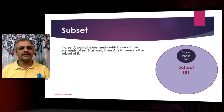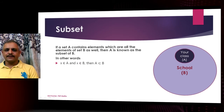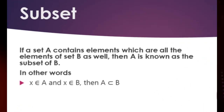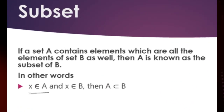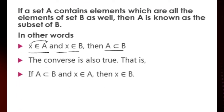Let's define it formally. If a set A contains elements such that all the elements of set A also belong to set B, then A is known as the subset of B. This is read as: x belongs to A implies x belongs to B. That means all the elements which belong to A also belong to B, so we say A is a subset of B. The converse is also true: if A is a subset of B, then all the elements of A also belong to B.